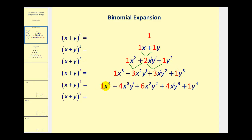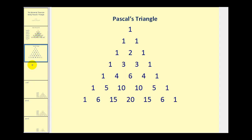And there's the one. In the last row, we have a one at the start and one at the end. One plus three gives us four, three plus three gives us six, and three plus one gives us four. So if we take a look at just Pascal's Triangle, every row starts and ends with a one, and the numbers in between are obtained by adding the two numbers above it.